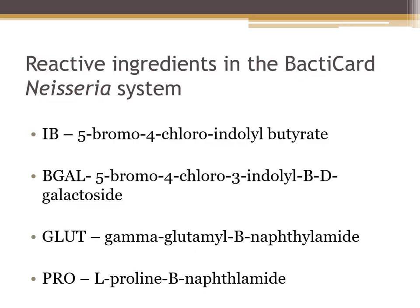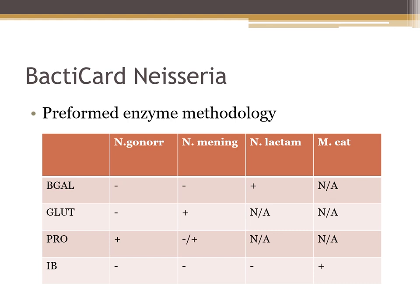Here's the list of reactive ingredients in the Bactacard Neisseria system — you'll need to recognize these. For example, Moraxella catarrhalis is positive in the IB well, which contains 5-bromo-4-chloroindolyl butyrate. In summary: Neisseria gonorrhoeae is PRO positive; Neisseria meningitidis is GLUT positive with variable PRO; Neisseria lactamica is BGAL positive; and Moraxella catarrhalis is IB positive. Those are the key enzymatic reactions for each species.